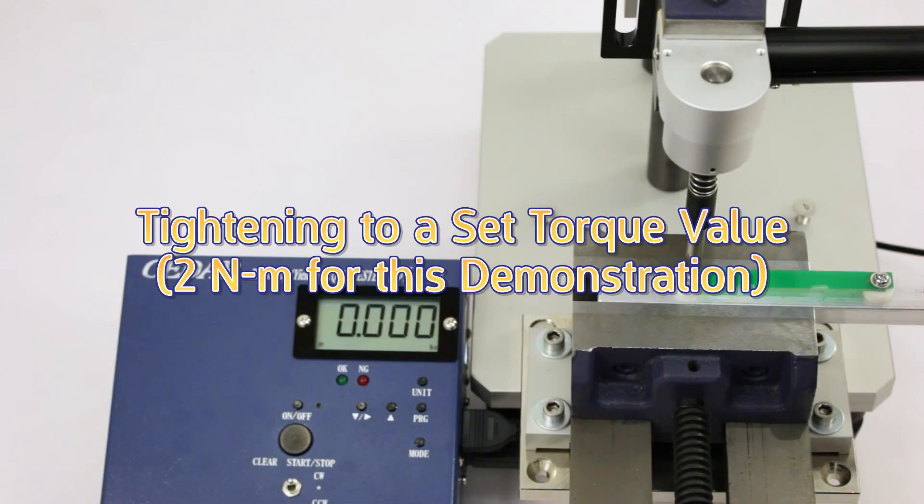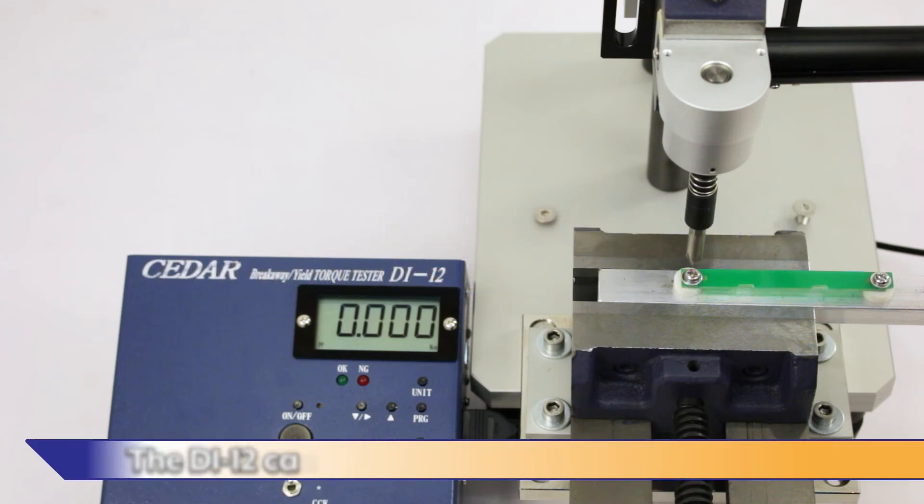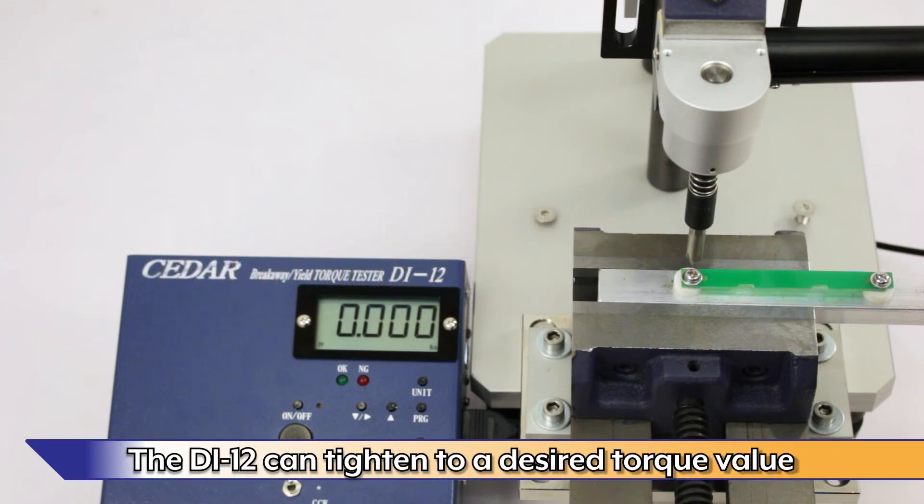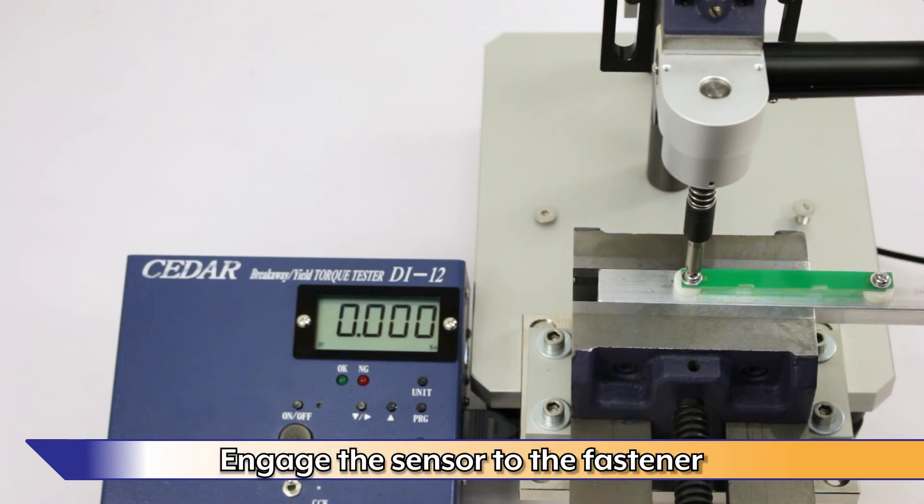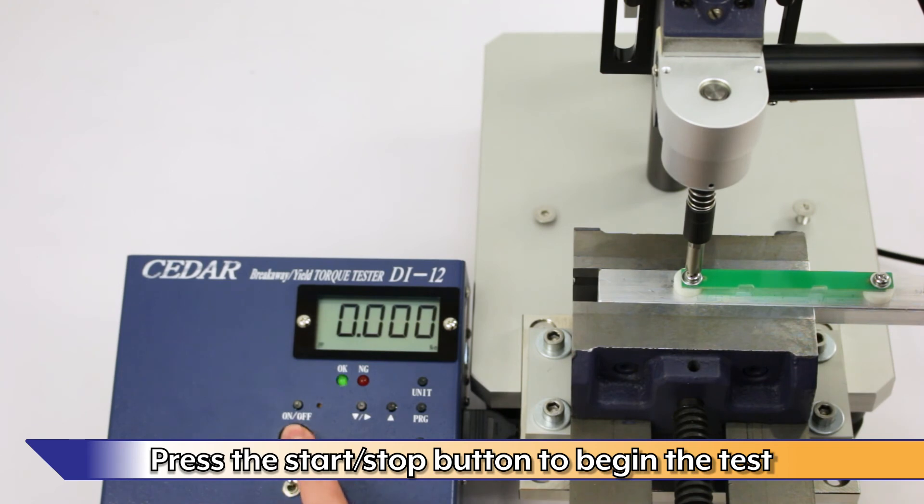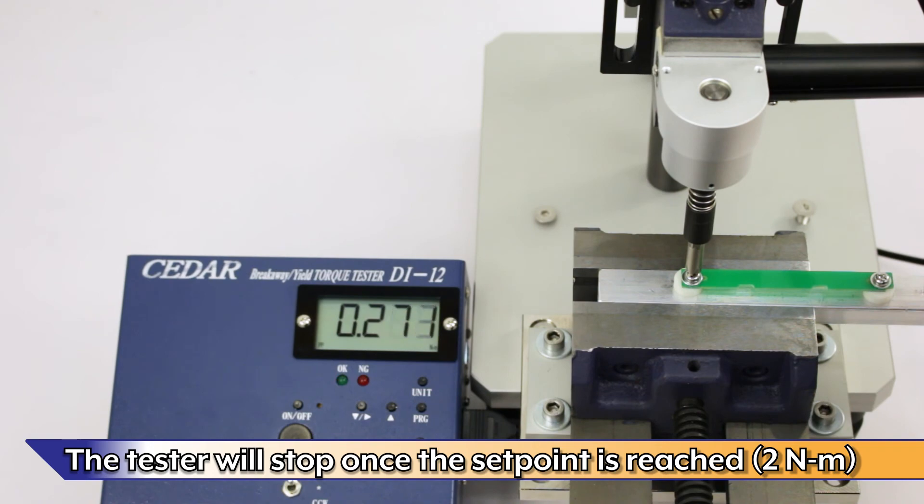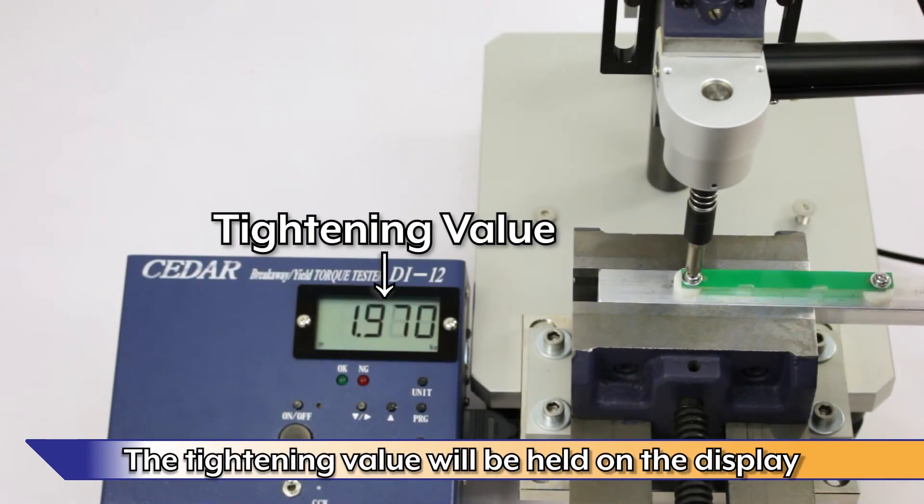Tightening to a set torque value, 2Nm for this demonstration. The DI-12 can also tighten to a desired torque value. Engage the sensor to the fastener. Press the Start-Stop button to begin the test. The tester will stop once the set point is reached, 2Nm. The tightening value will be held on the display.